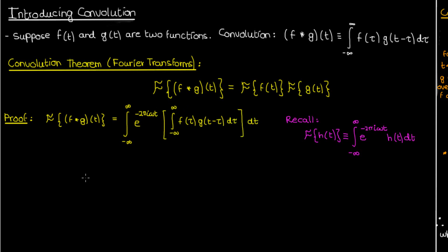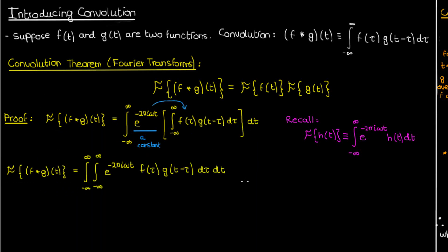What's convenient here is that the integral in brackets is with respect to tau, and the exponential term is only with respect to t, so it's effectively a constant for the bracketed integral. Because it's a constant, we can move it inside the bracketed integral, giving us a new expression.